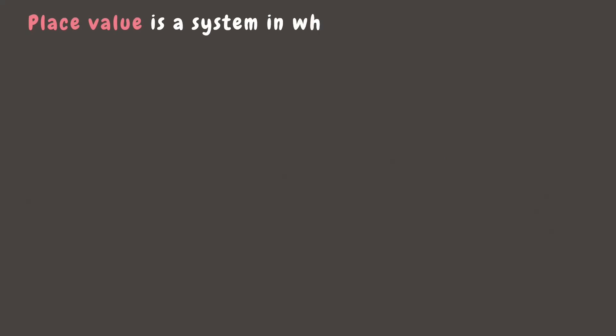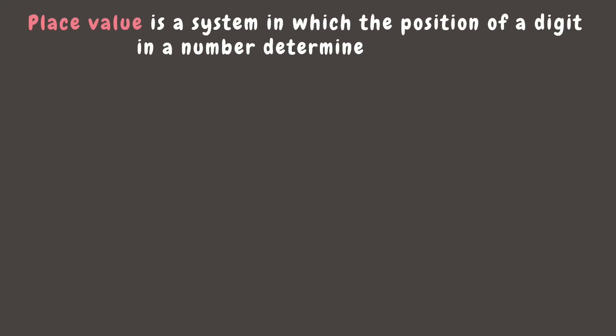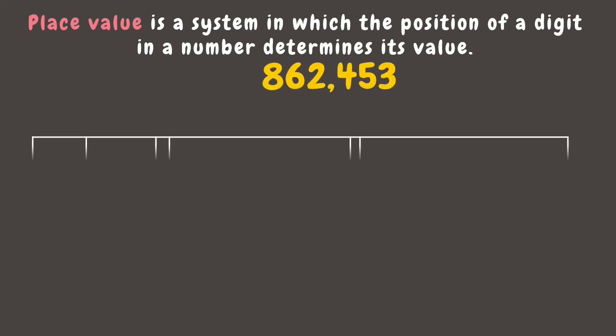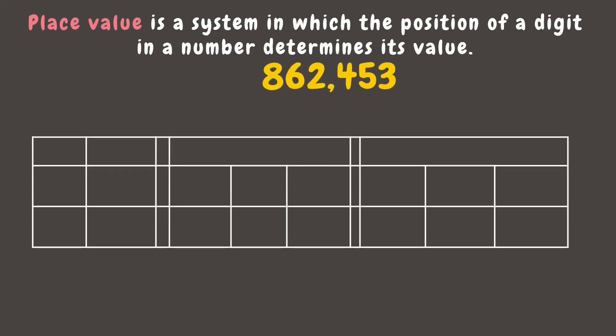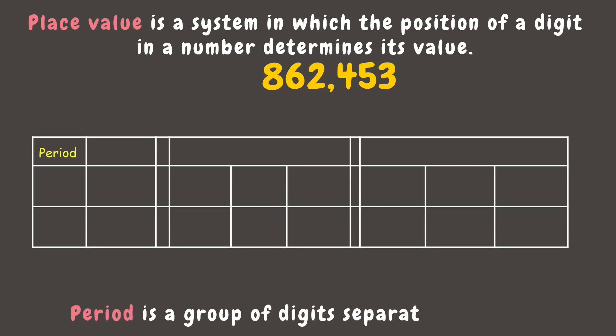...place value is a system where the position of a digit in a number determines its value. We use a place value chart to help us identify the place of each digit. When writing large numbers, we use periods, or groups of digits, separated by commas.